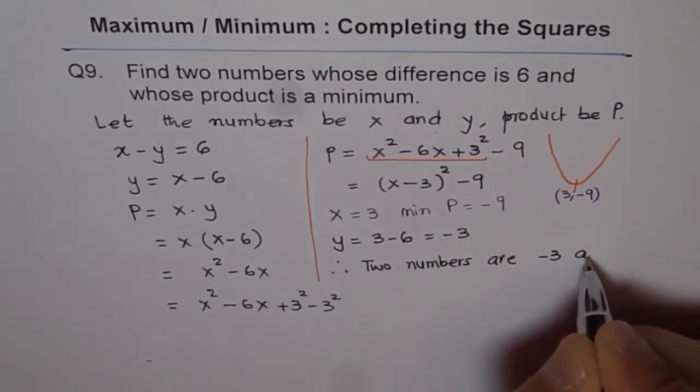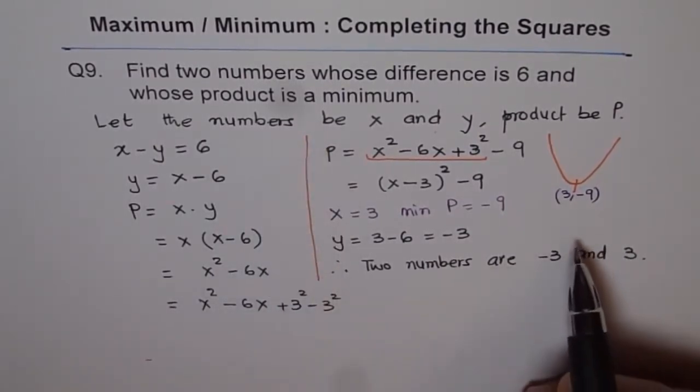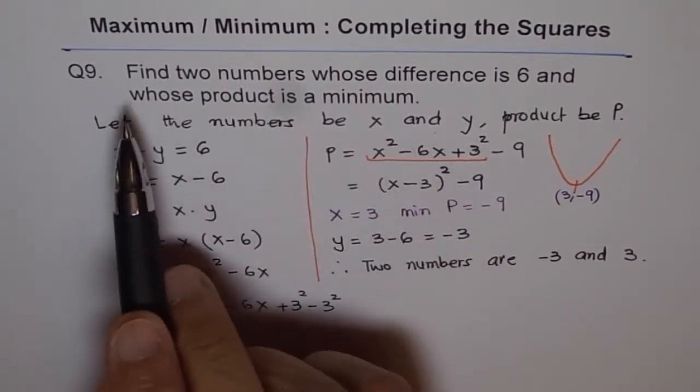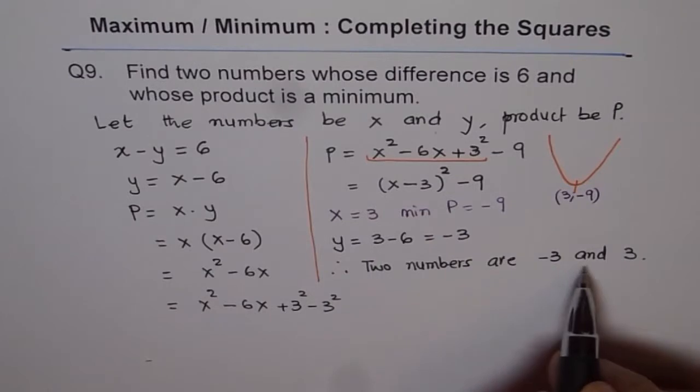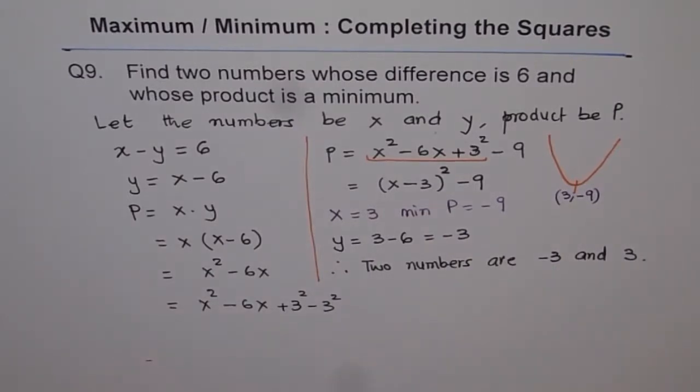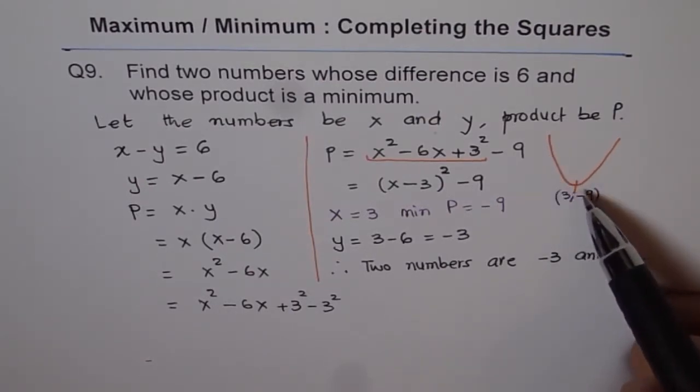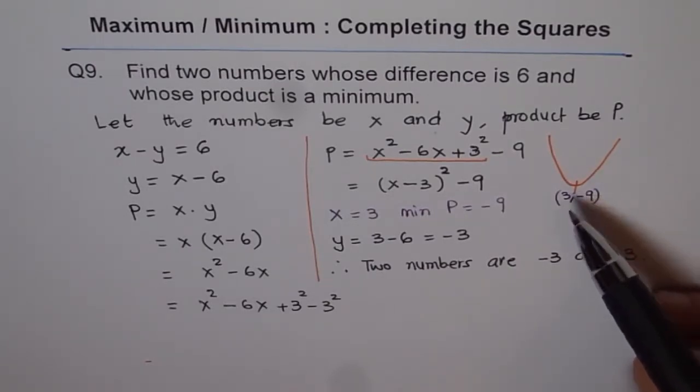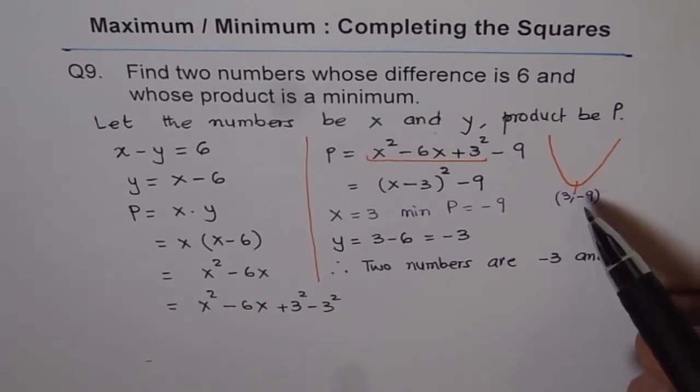And their minimum product is minus nine, which they have not asked for. They only ask for the two numbers, therefore this answer is good enough. The two numbers are minus three and plus three. I hope you understand the process and also understand why we have a minimum, because this quadratic equation opens upwards and minimum is always at the turning point, the vertex, which is at three and the value of minimum is minus nine.